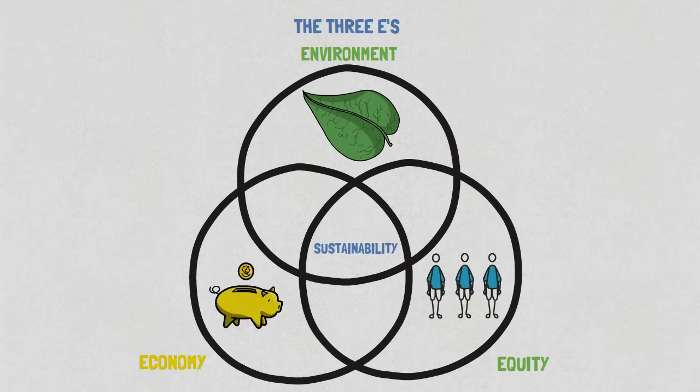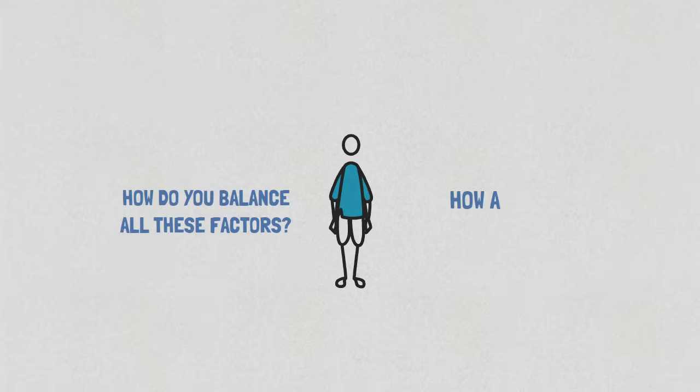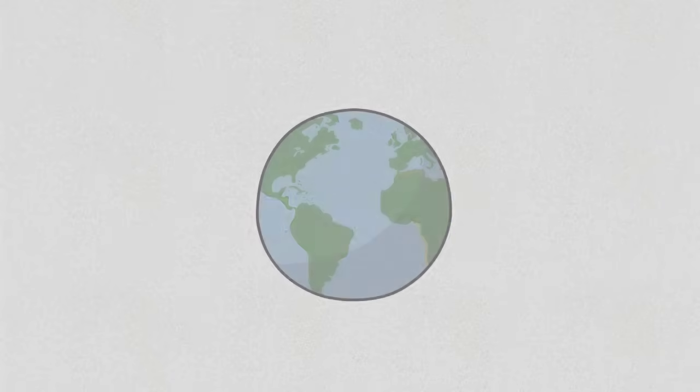So if you only look at short-term economic profit, then you're not going to end up with a thriving economy in the long term. If you're only looking at conserving the environment without thinking about economics and understanding how people are making their livelihood, you also may not end up with a thriving society. And if you aren't looking at equity, you're going to end up with a few people that have most of the resources and many people who are hungry and not living a good life. And that's not really a successful human society either. So sustainability is really about addressing all of those and understanding the connections between them.